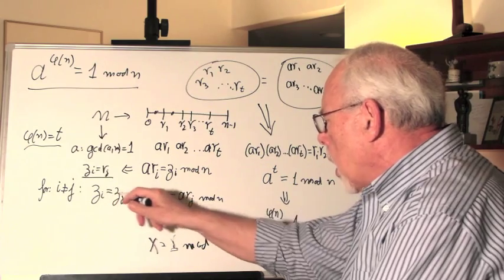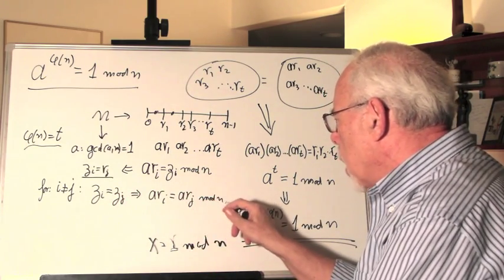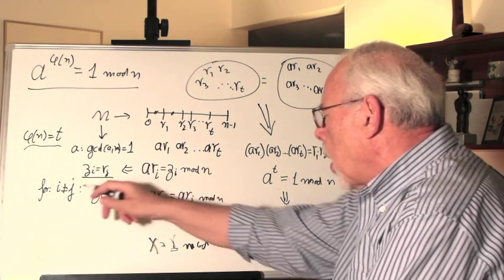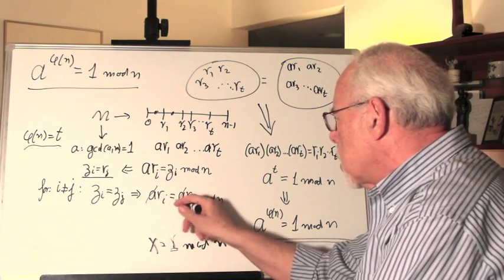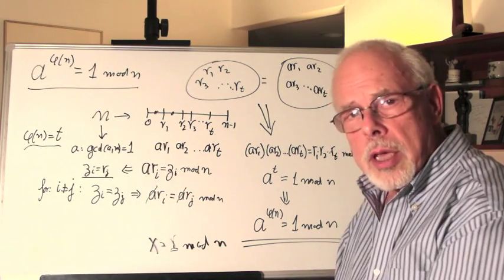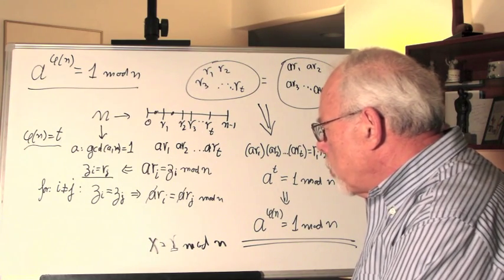Well, zi is a times ri, zj is a times rj, mod n. Now they cannot be equal if i is not equal to j, because we can cancel this and it shows that ri equals rj. So here comes this insightful conclusion.